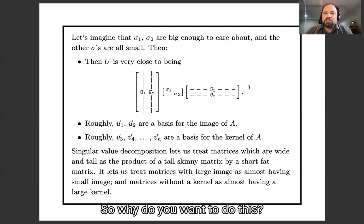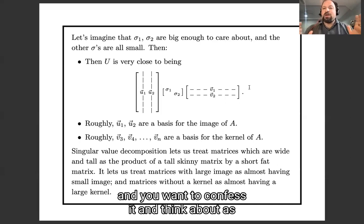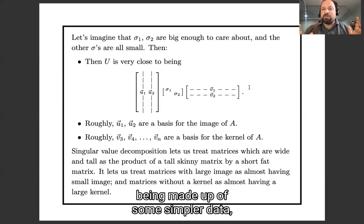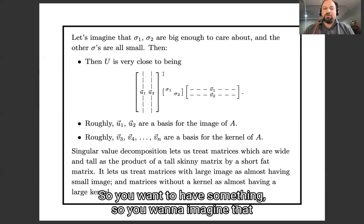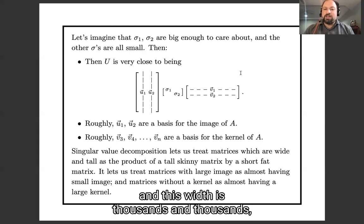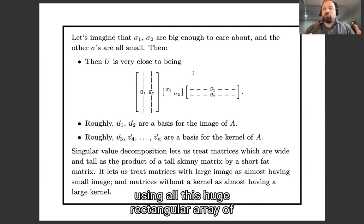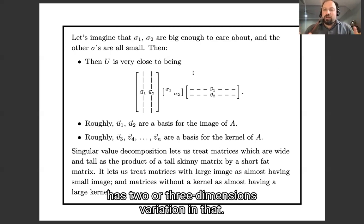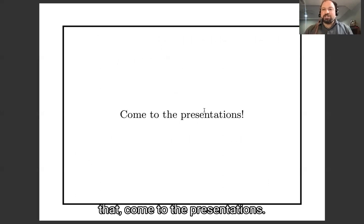So why do you want to do this? Well, you want to do this whenever you have some huge rectangular grid of data and you want to compress it and think about it as being made up of some simpler data which doesn't actually have very many dimensions in it. So you want to imagine that this height is thousands and thousands and this width is thousands and thousands, but this really is only two or three. And you're saying all this huge rectangular array of data really only has two or three dimensions of variation in it. And to see lots of concrete examples of that, come to the presentations.